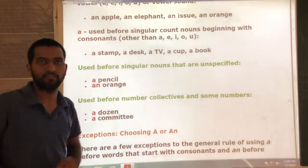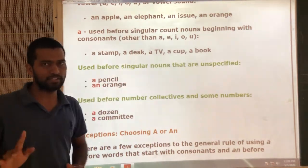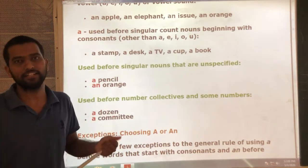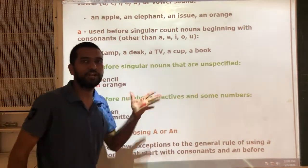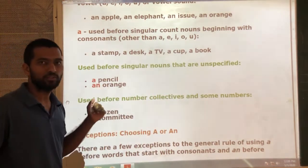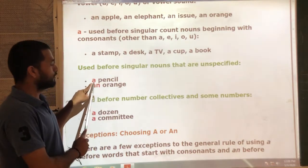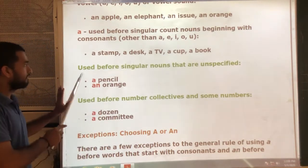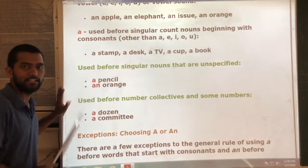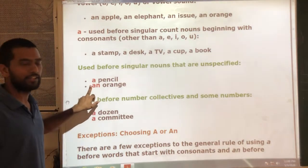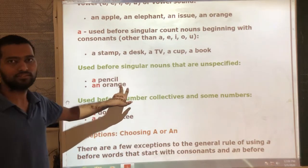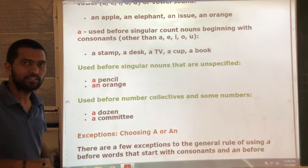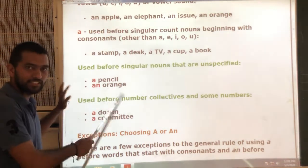For example, 'the red pencil' means there is only one red pencil. So for particular specified nouns, we use the definite article. Unspecified means which is unknown — there are so many pencils, so we use 'a' for unspecified nouns. That is why 'a' and 'an' are called indefinite articles, because the noun is unspecified and not known — the exact one is not specified.